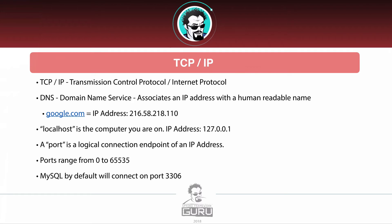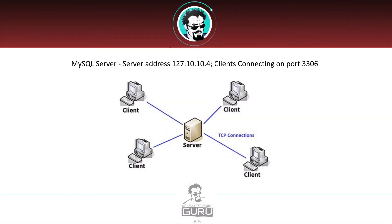MySQL uses port 3306 by default, and we will be using 3306 throughout the course. You can configure MySQL to connect on a different port — some people do this for security purposes to obscure it, which is perfectly valid — but for this course we'll use the default of 3306. Here's an example: in the middle we have the MySQL database server, surrounded by clients with TCP connections into it. Say that server has an address of 127.10.10.4 — everybody connects on that IP address over port 3306.